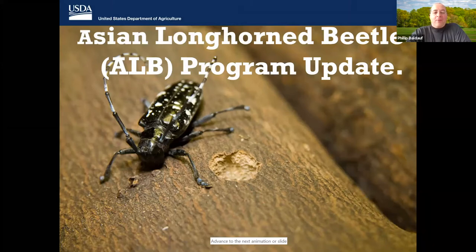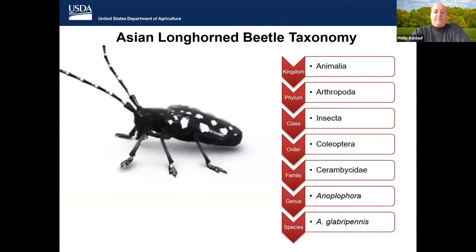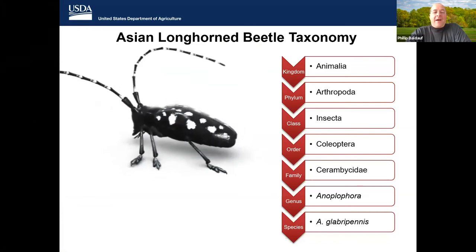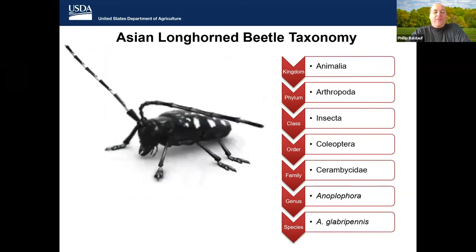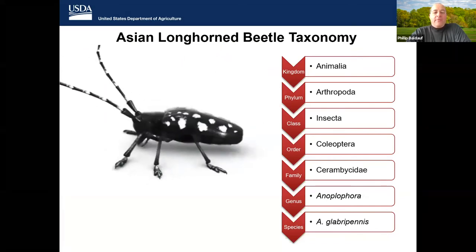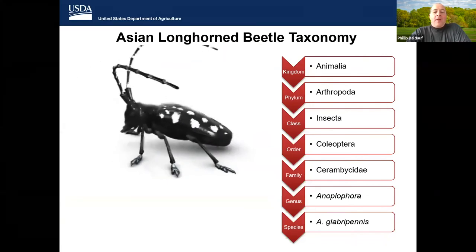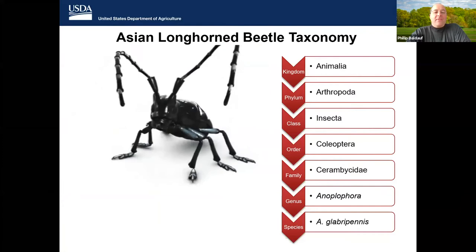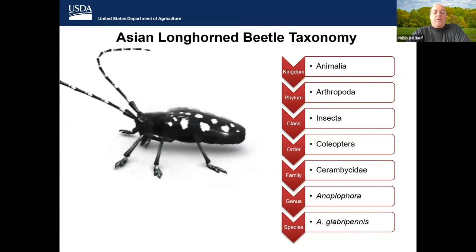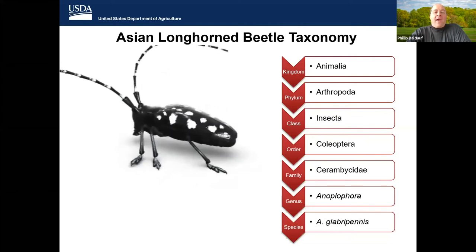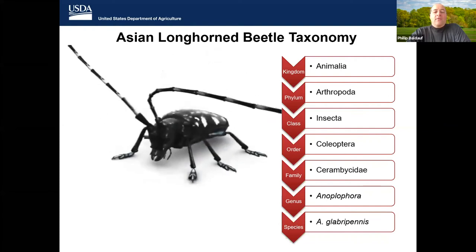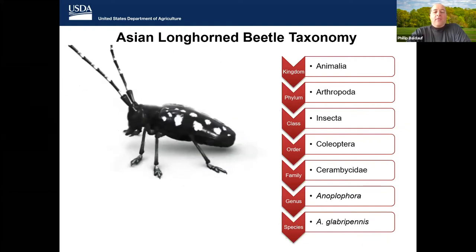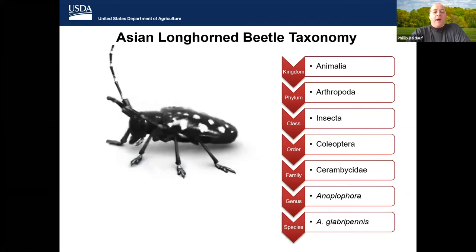Thank you, and welcome to the presentation. I find it helpful to provide some taxonomic orientation to ALB early on so we know where ALB falls in relation to other organisms. ALB, or Anaplophora glabropenis, is in the cerambicid, or long-horned beetle family. Saying these beetles have long horns is a misrepresentation, as they don't have any horns at all. The long antennae are where the long-horned beetles derive that common name.